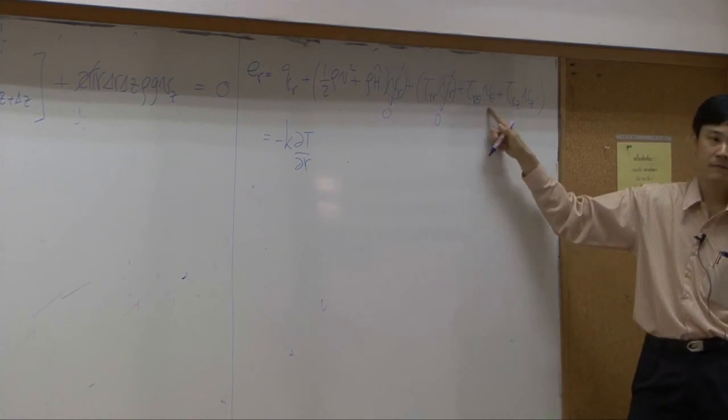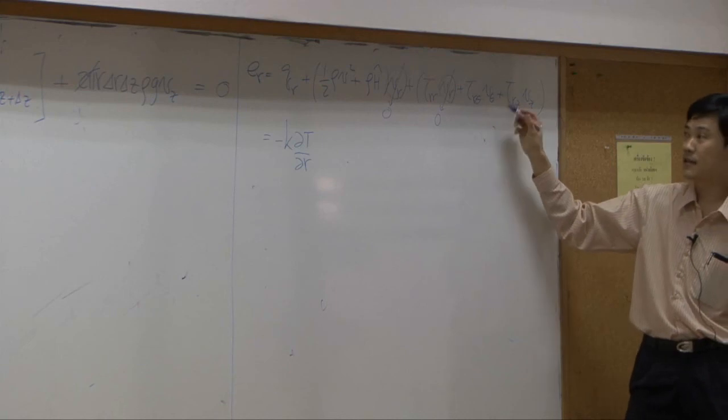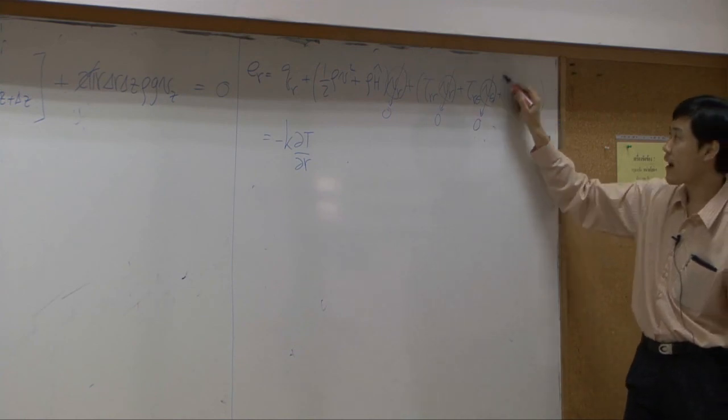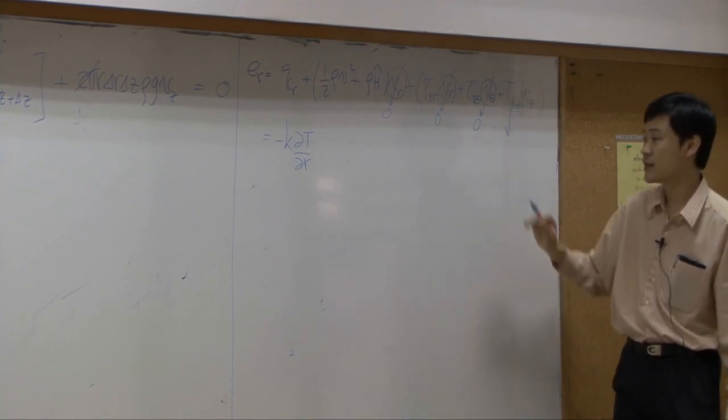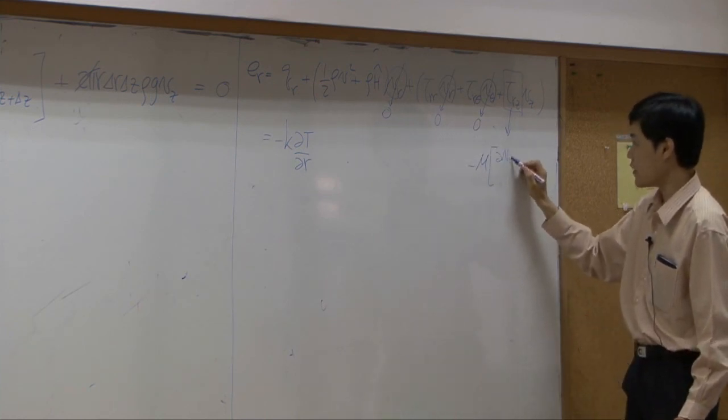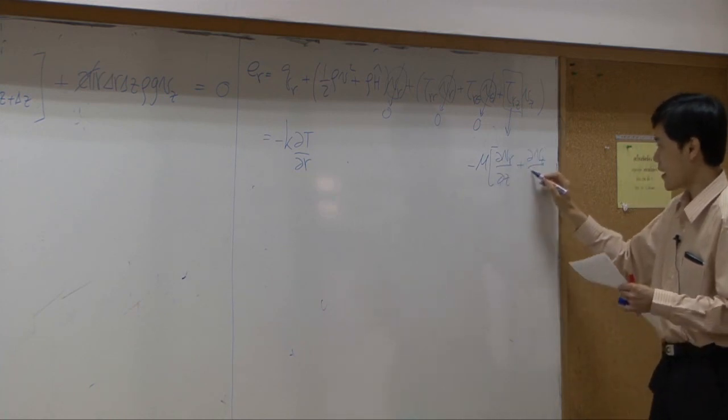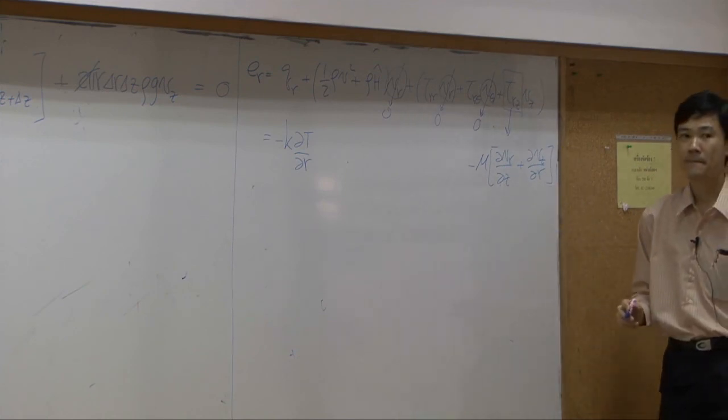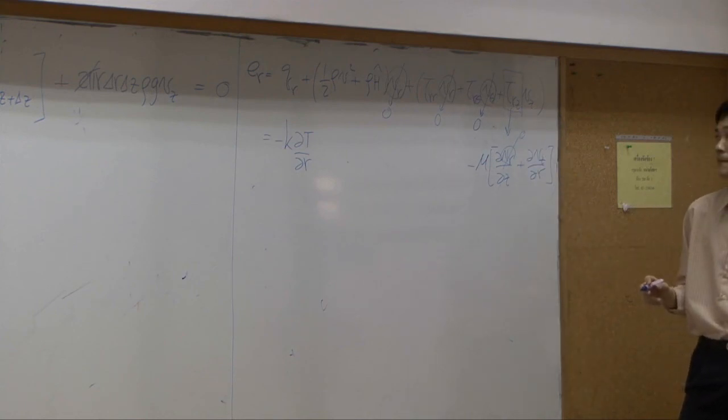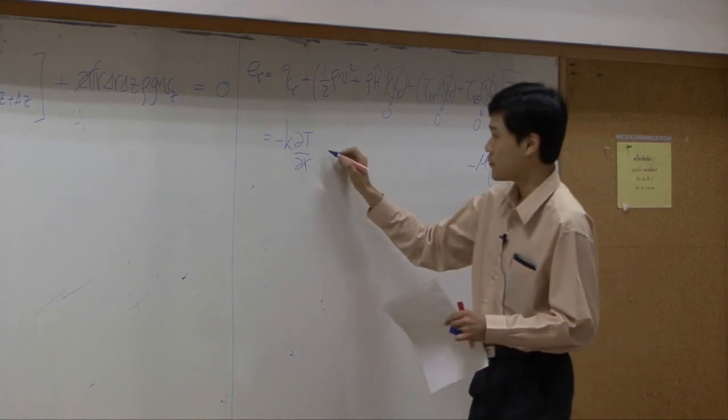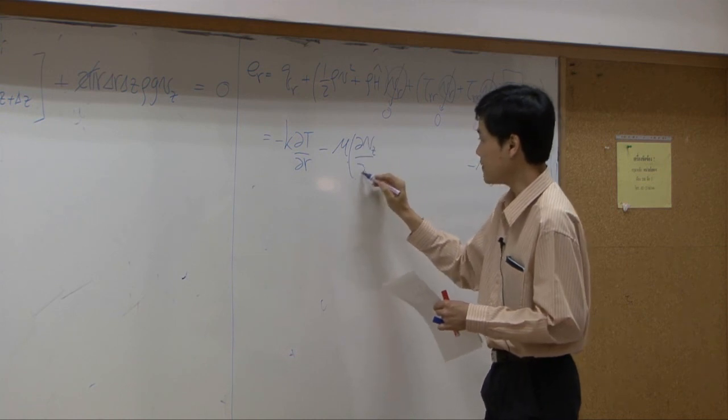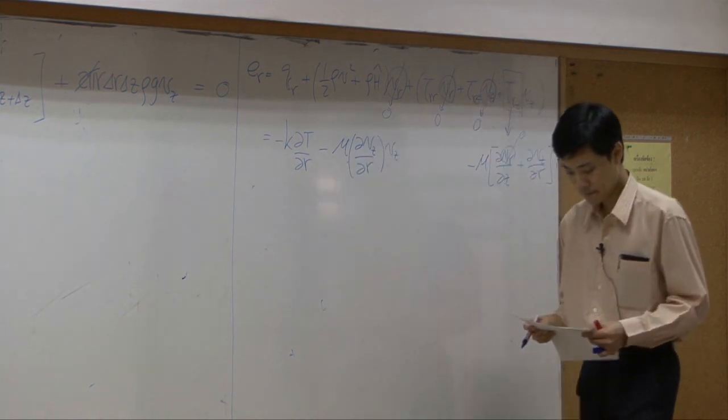How about here? Yes, it can be dropped. V zeta is 0. V z is not. But tau r z can be expanded using Newton law. Tau r z is minus mu d v r by d z plus d v z by dr. Then v r becomes 0. So what we have left would be minus mu d v z by dr times v z.